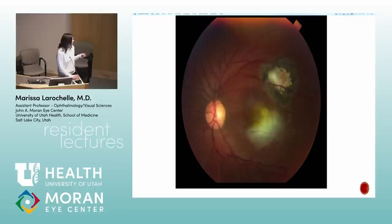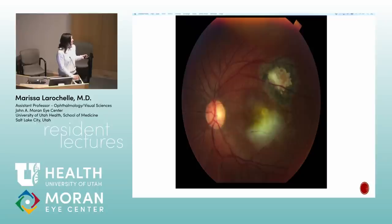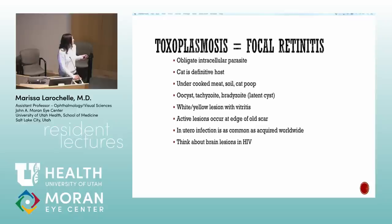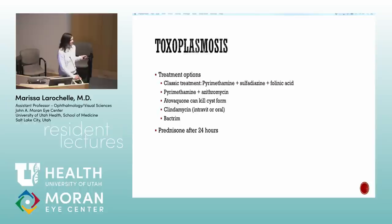Toxoplasmosis is a focal retinitis — usually associated with vitritis. A clear view is unusual but can occur with a clump of vitritis right over the lesion. Peripheral vascular sheathing and perivenular vasculitis are common. Transmission: uncooked meat, soil, cat feces. It occurs at the edge of an old scar. If the patient has HIV, check the brain. Classic treatment: pyrimethamine, sulfadiazine, and folinic acid — not folic acid. Triple therapy adds prednisone to those three.